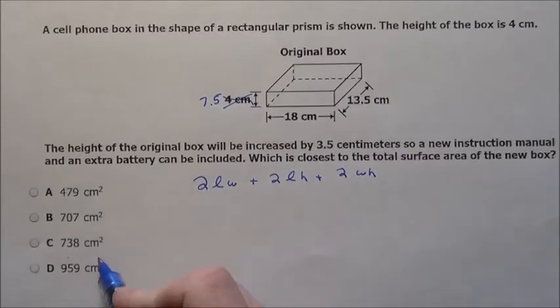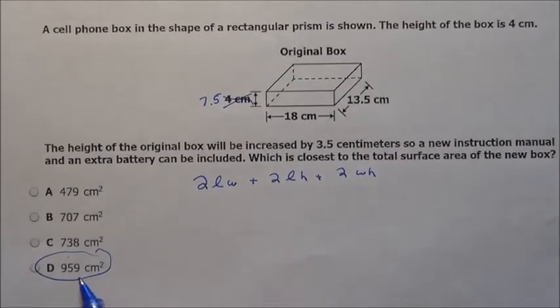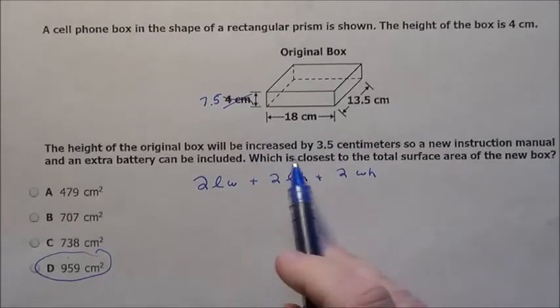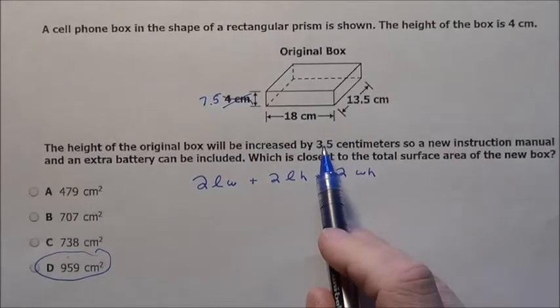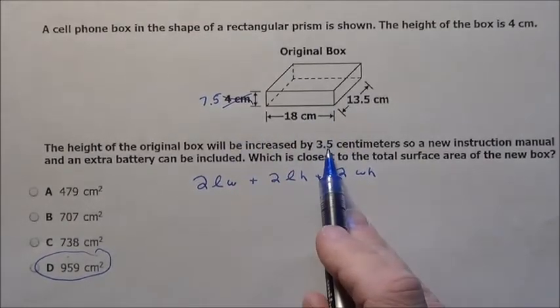When you plug all that in you're going to get this option D 959. The biggest thing is to read it and just realize hey the height this 4 is being changed going up almost doubling to 3.5 taller.